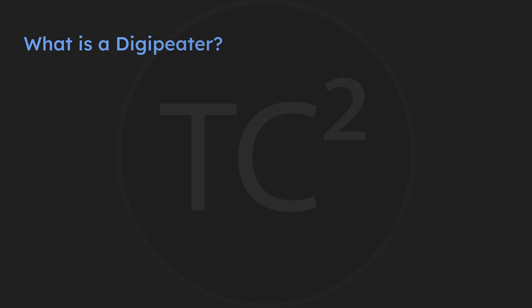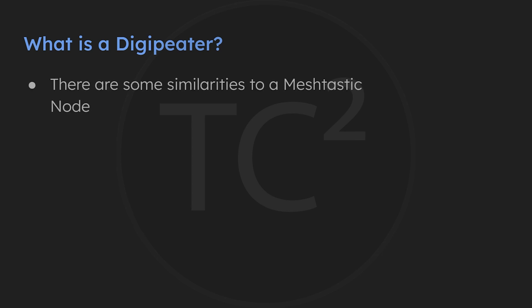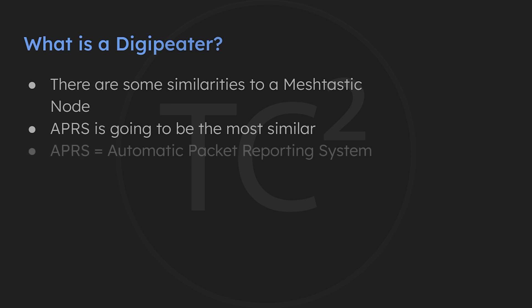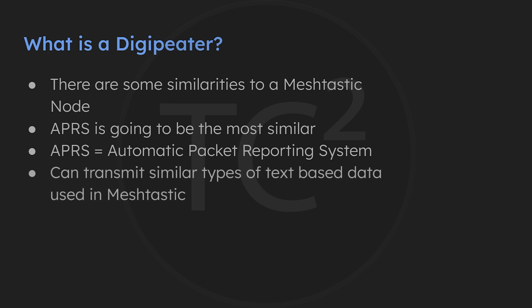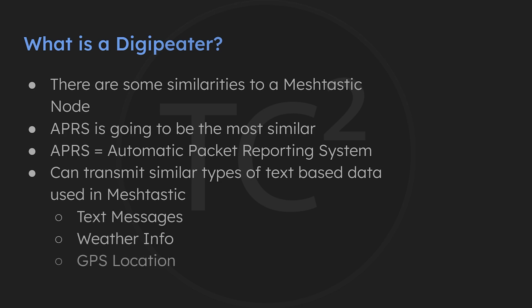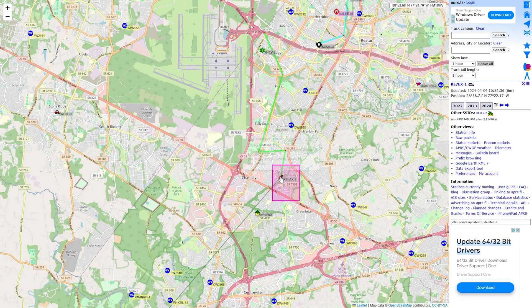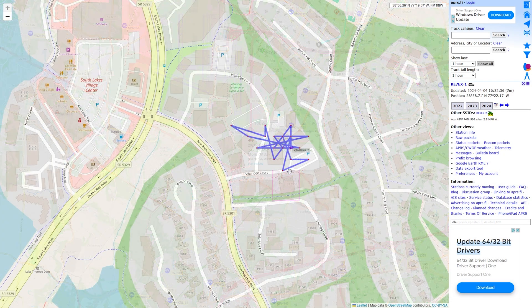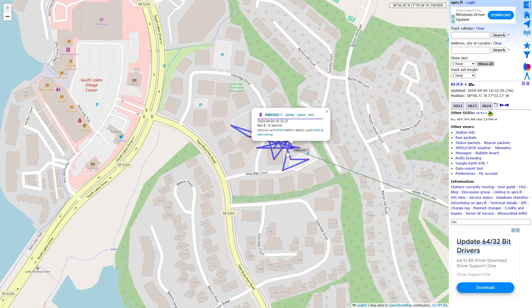You may not know what a Digipeater is, so I'll go over some of the similarities Digipeaters and Packet Radio have with Meshtastic so it's easier to follow. I'll explain Digipeaters from the APRS side of things since that'll be the most similar to Meshtastic. APRS stands for Automatic Packet Reporting System and it's been around since 1984. It's a way to transmit data like text messages, weather info, and GPS locations, just like you can do with Meshtastic. You'll generally have stations just sending out their position or text messages, which would be similar to using Meshtastic as a client.